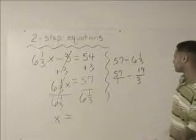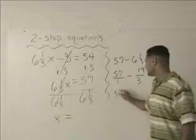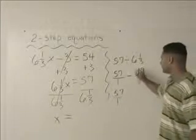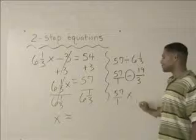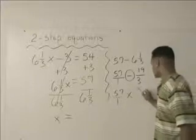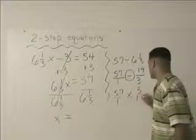Now, the next step in this process is we're going to bring down 57 over 1. When you divide fractions, you always take the division sign and change it into multiplication and you write the reciprocal of 19 over 3, which is 3 over 19.